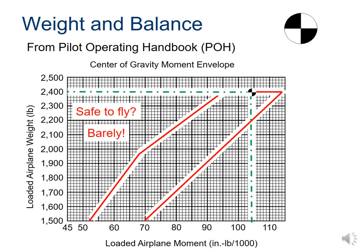Note that the change of slope in the upper limit of the graph is because the stability of the aircraft with respect to weight distribution is more complex than a linear relationship, such as applying a load to a wrench. This graph is the result of extensive modeling and testing by aerospace engineers.